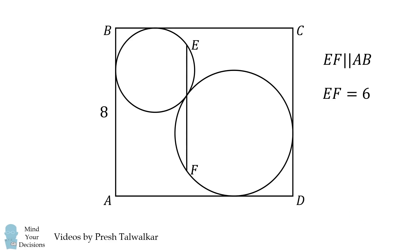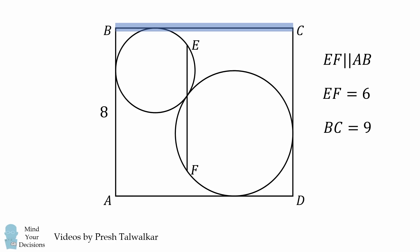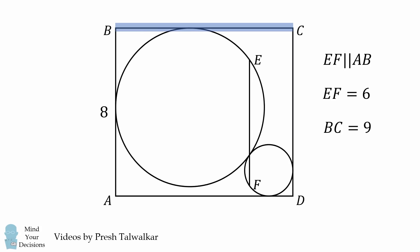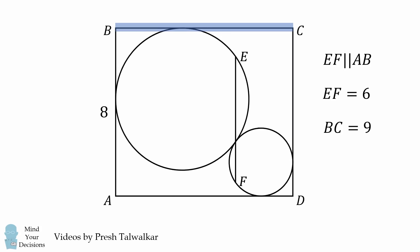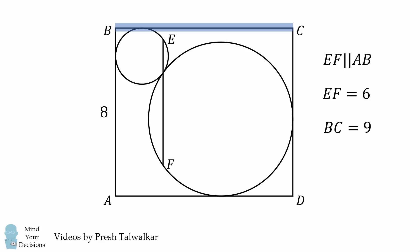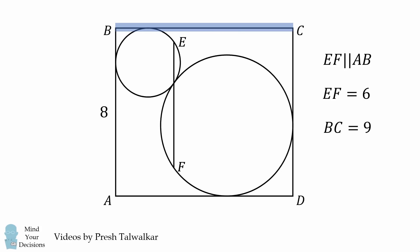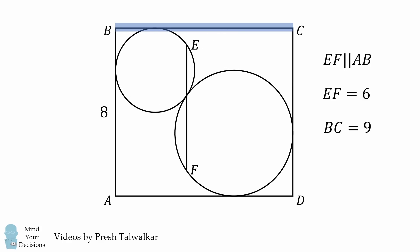We will prove the rather fascinating result that BC is always equal to 9. What's amazing is that BC is equal to 9 regardless of the sizes of the two circles. Because EF is equal to 6, that exactly specifies that BC is equal to 9. Why is that the case?